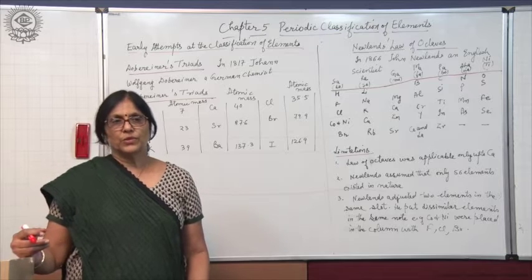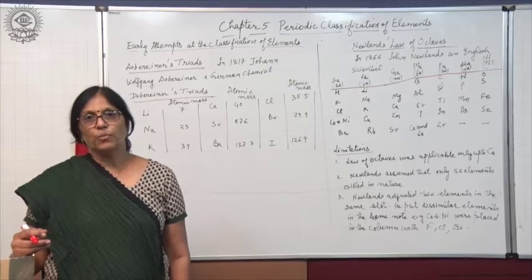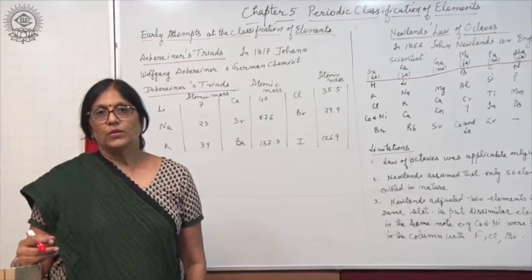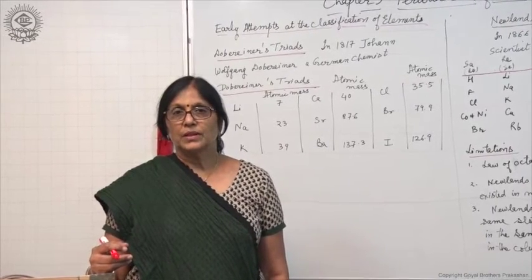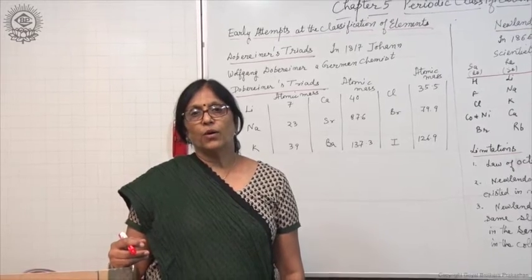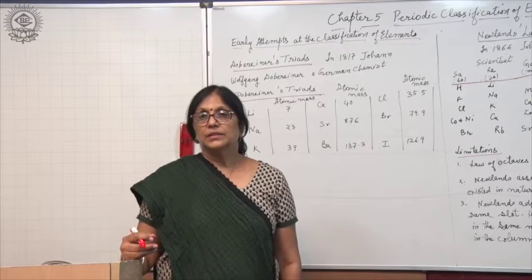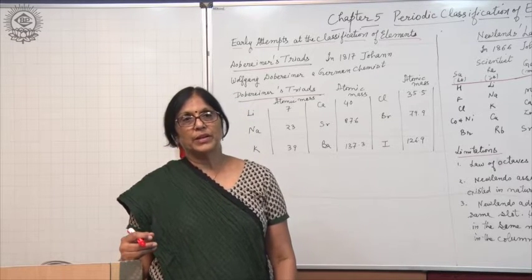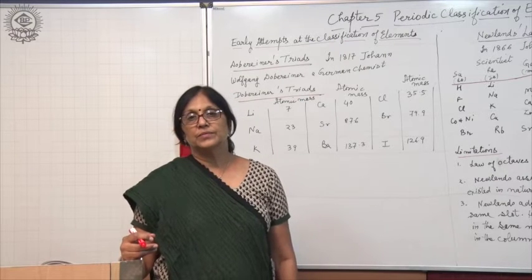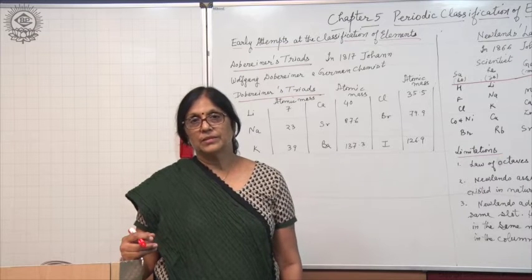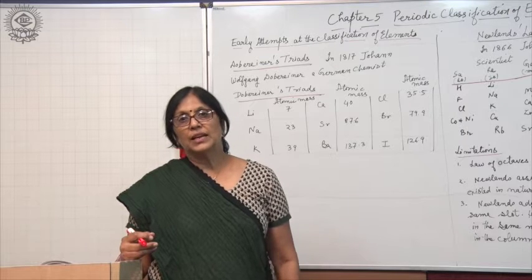Let us first take a daily life example. When you visit a shop or a mall and you have to search for soap, you will find at a particular place all different varieties of soap. The bathing soaps are placed separately from the washing soaps, shampoos are kept separately, cereals are kept separately, pulses are kept separately. So, a grouping of similar elements has been done.